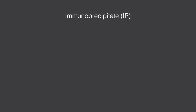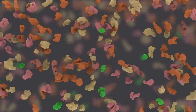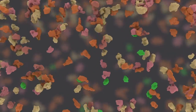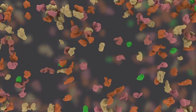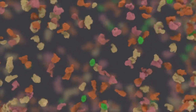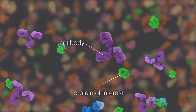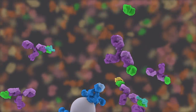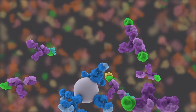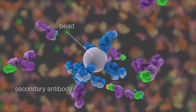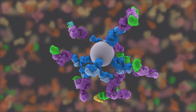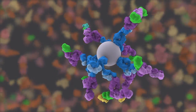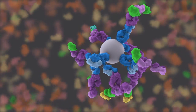A fourth commonly used lysate type is an immunoprecipitate, or IP. An IP is performed to identify and detect proteins that may interact with a protein of interest. To perform an IP, the protein of interest is isolated from a protein lysate by the addition of an antibody that specifically recognizes it, followed by a secondary antibody conjugated to beads used to precipitate the protein-antibody complex out of the lysate solution. In this manner, the researcher isolates the protein of interest along with any other proteins with which it interacts physically.